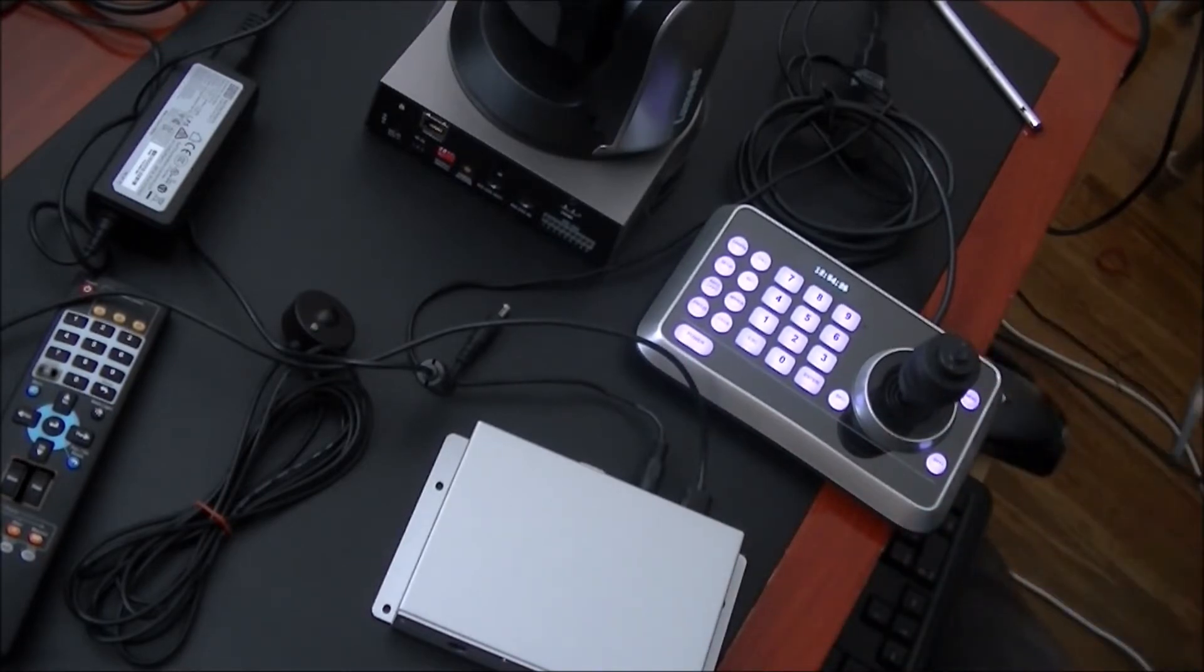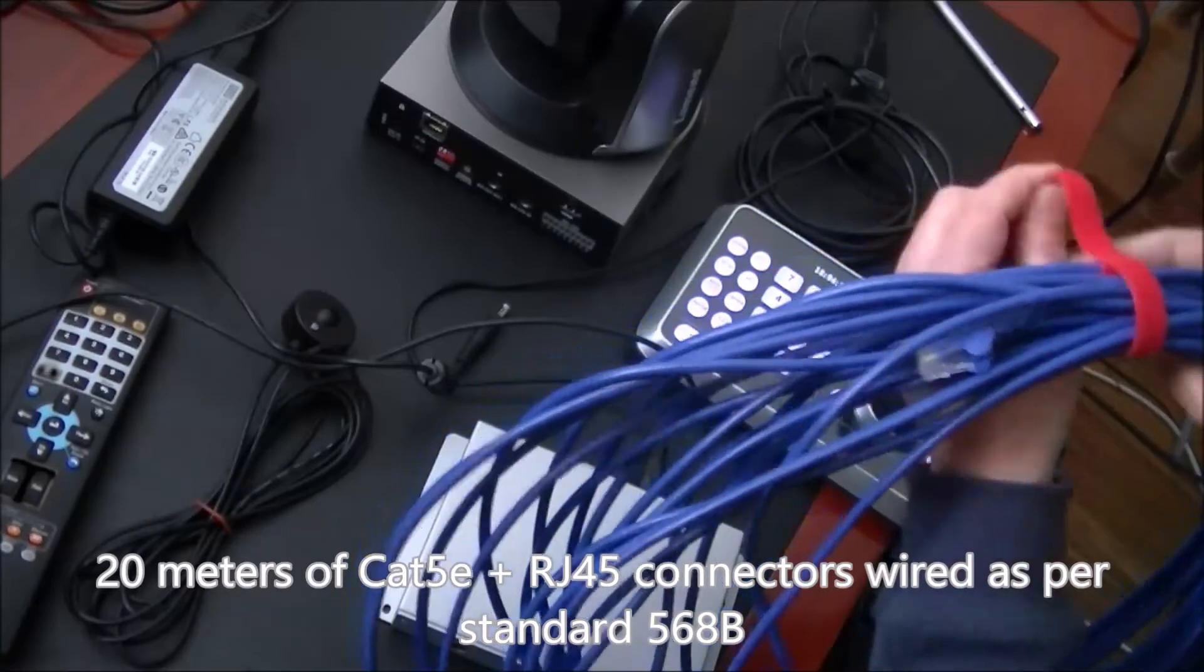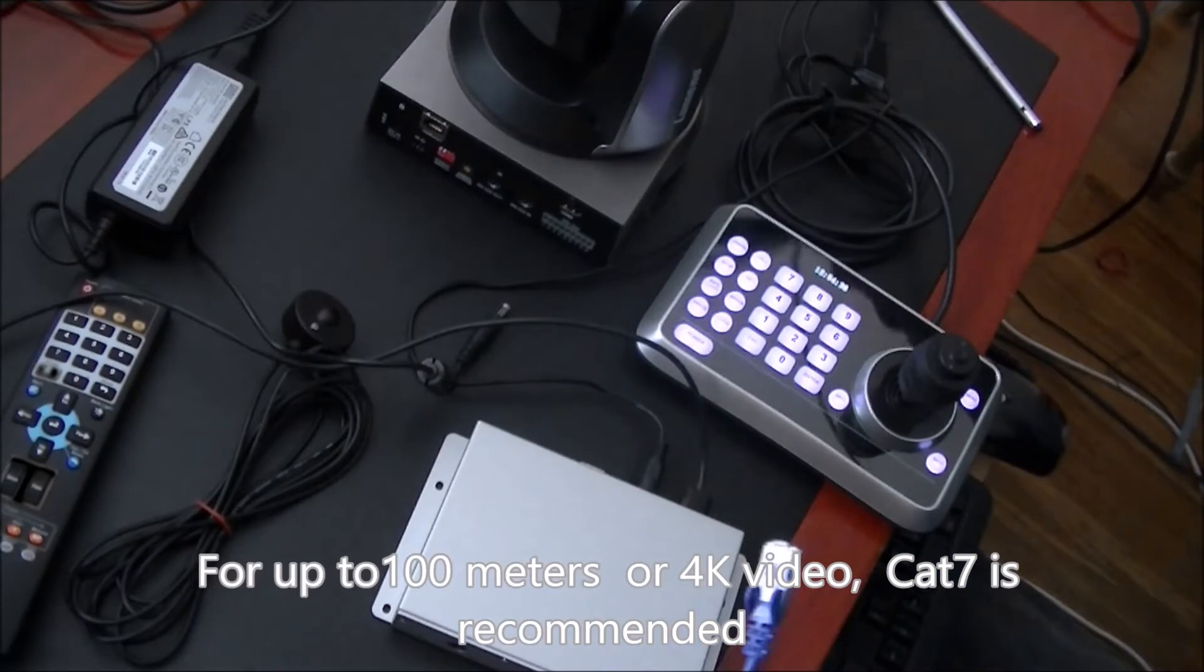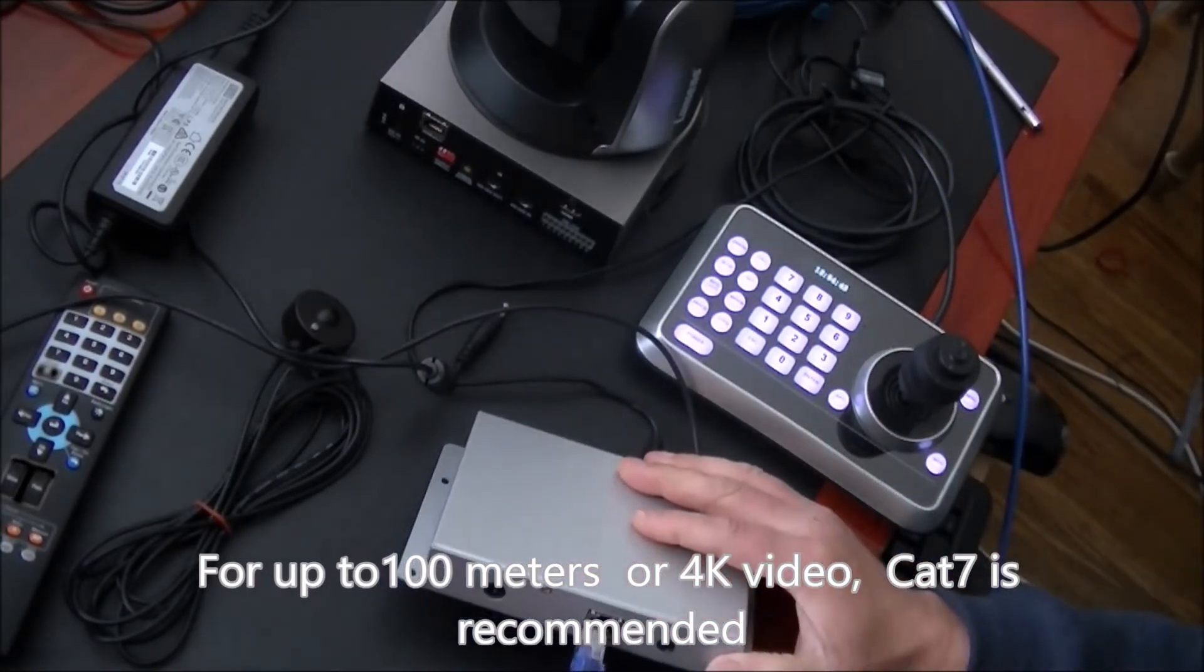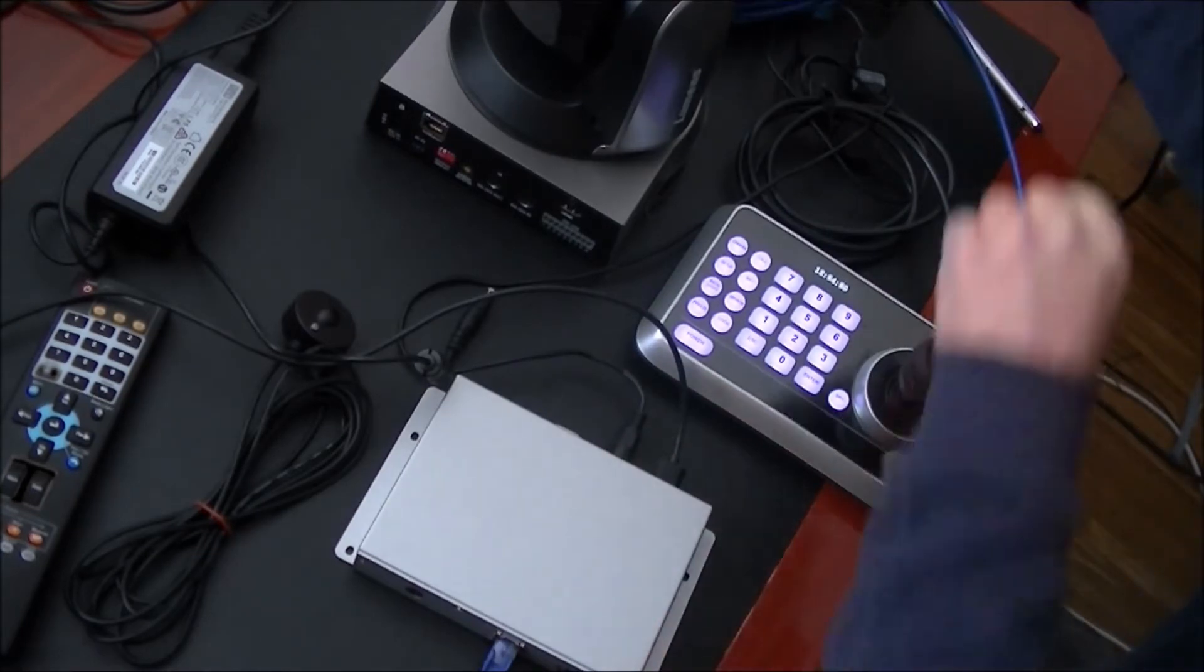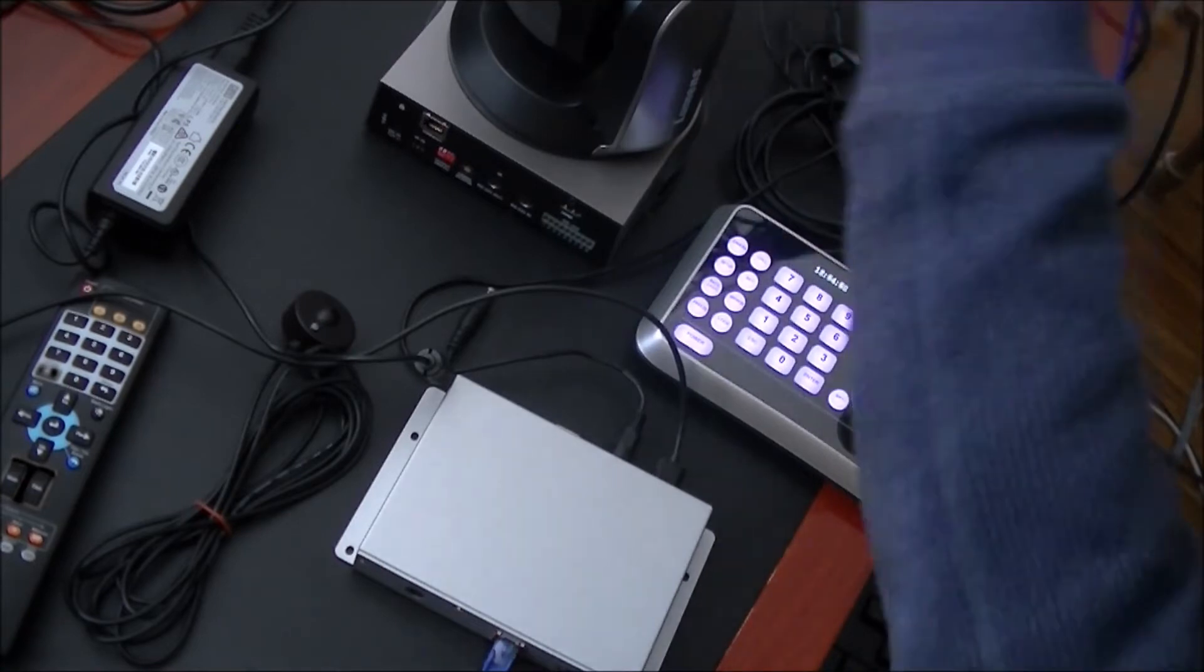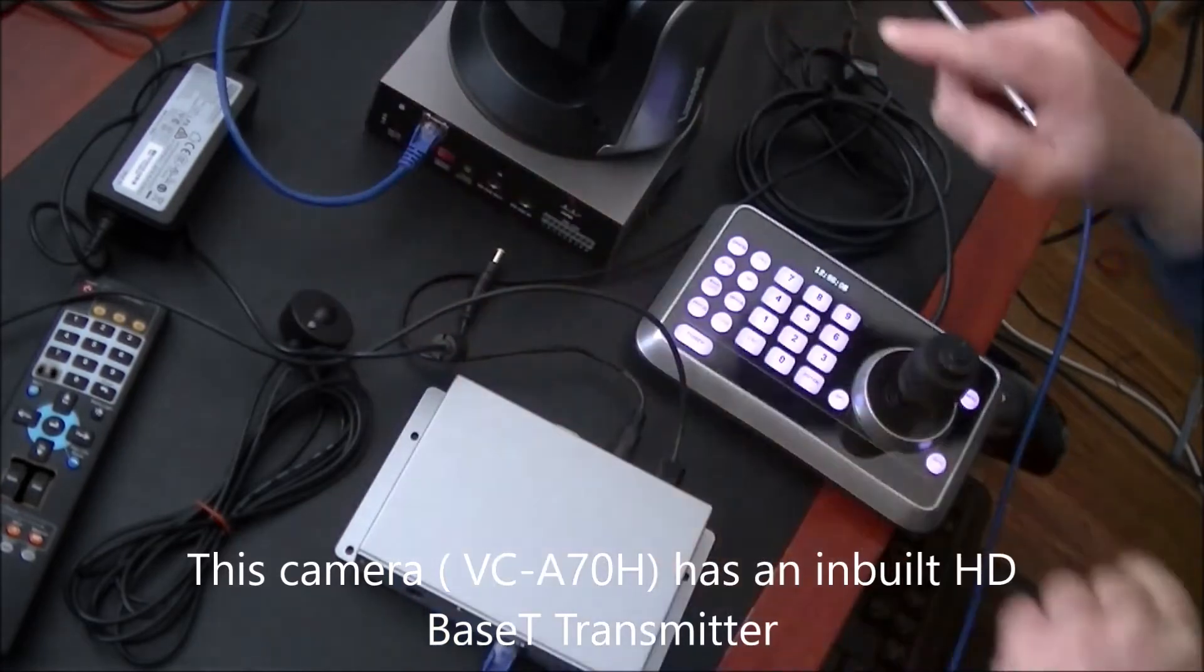Now we are going to use this cable which is 20 meters of cable to transmit the camera to a far location. We are going to connect this end into the HD BaseT and we are going to connect the other end of this cable into the HD BaseT connection of the camera.